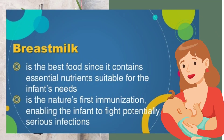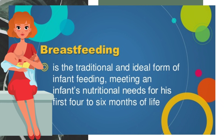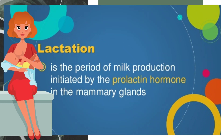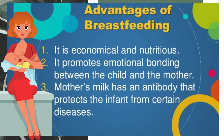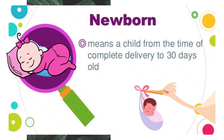Breast milk is the best food for infants since it contains essential nutrients suitable for the infant's needs. It is nature's first immunization, enabling the infant to fight potentially serious infections. Breastfeeding is the traditional and ideal form of infant feeding, meeting an infant's nutritional needs for the first four to six months of life. Lactation is the period of milk production initiated by the prolactin hormone in the mammary glands. Advantages of breastfeeding: it is economical and nutritious, it promotes emotional bonding between the child and the mother, and mother's milk has antibodies that protect the infant from certain diseases.